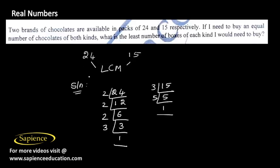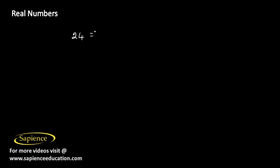So 24 can be written as 2 to the power 3 into 3. So 2 cube into 3, and 15 can be written as 3 into 5.